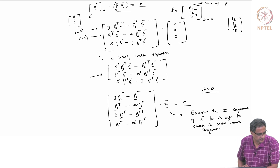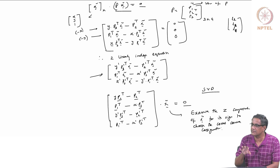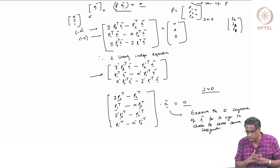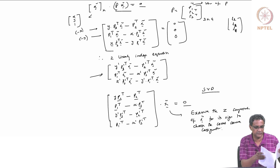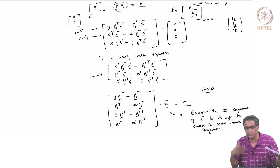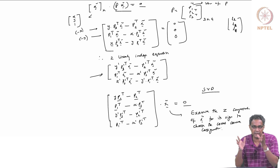So this is triangulation — sparse only — just to get the camera poses. Examine the Z component of x̃ for its sign to choose the correct camera configuration. A further question: here we used the essential matrix, meaning we knew the intrinsics. A more complicated case is if you don't know the intrinsics and only have a fundamental matrix — we'll explore that next class, along with what other ambiguities can arise when you give more freedom.